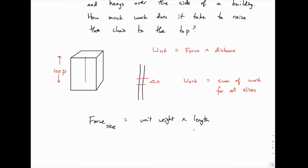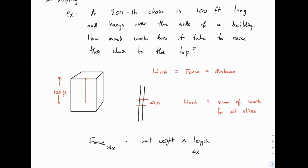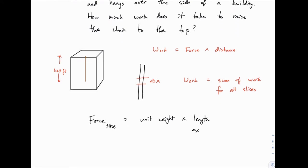Now the length is just delta x. And the unit weight, remember if it's one foot long, we would multiply the length by two pounds. If it's two feet long, we would multiply the length, two feet, by two pounds again. So what we did is we divided 200 pounds by 100 feet, and we figured out the unit weight is 200 divided by 100, or two pounds per foot.